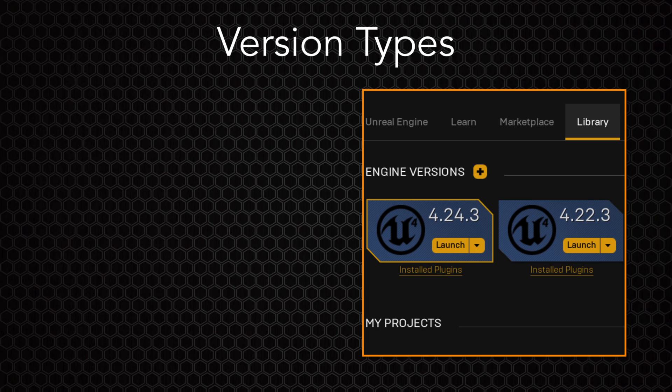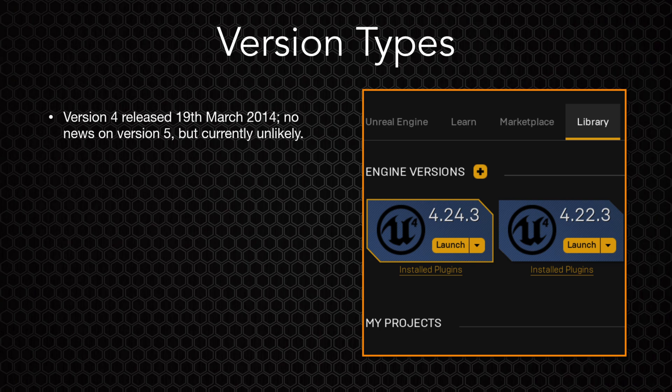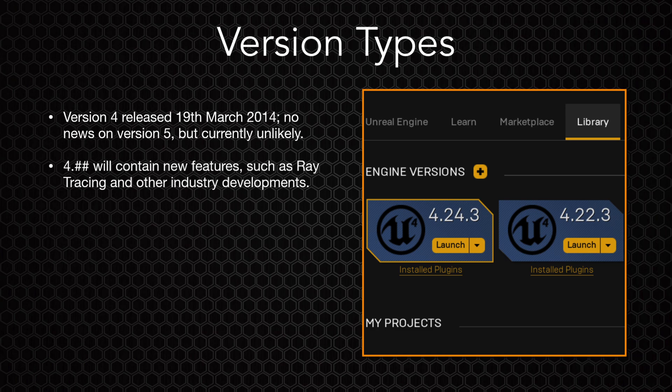Now we'll briefly cover version types. At the time of recording, the most current version of Unreal Engine is 4.24.3. The first number might suggest that an Unreal Engine 5 could drop at any moment, but it's a lot more like Microsoft with Windows 10 or Apple with Logic Pro 10 and Final Cut Pro 10, with regular updates replacing a full version upgrade. While it might be tempting to use the newest version as it releases every time, I would strongly advise against that, as whether or not an update is stable depends entirely on its revision.